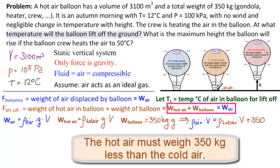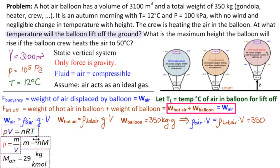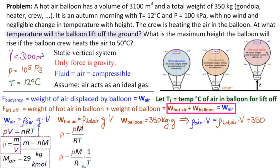The equations we need are: the ideal gas law PV equals nRT, rho equals mass over volume, and mass equals n times molar mass. The molar mass of air from tables is 29 kilograms per kilomole. Putting all of these together, as in the previous video, we get rho equals P times M over RT. Since we're doing this for two different temperatures, we can write this as rho equals PM over R times 1/T. This is the formula we'll use — let's put a box around it.